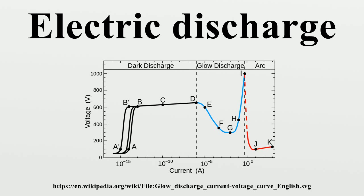Vacuum arc. Townsend Discharge Applications: The properties and effects of electric discharges are useful over a wide range of magnitudes. Tiny pulses of current are used to detect ionizing radiation in a Geiger-Müller tube.